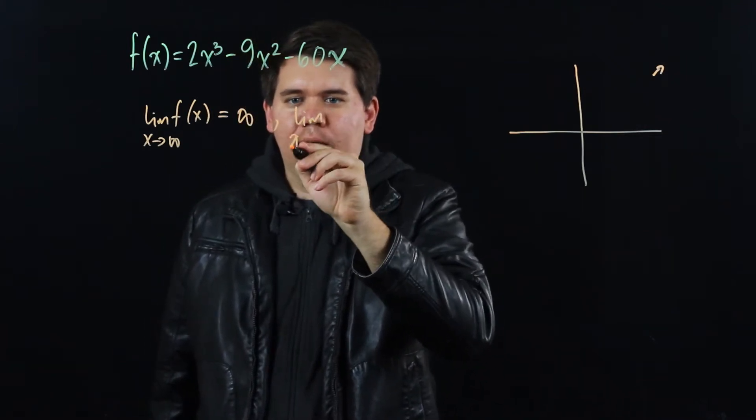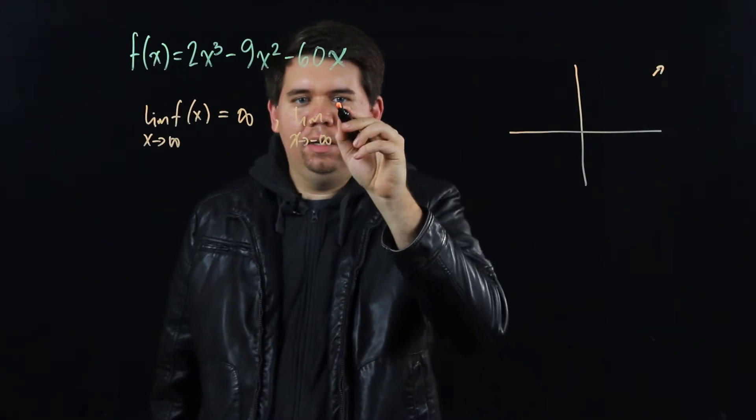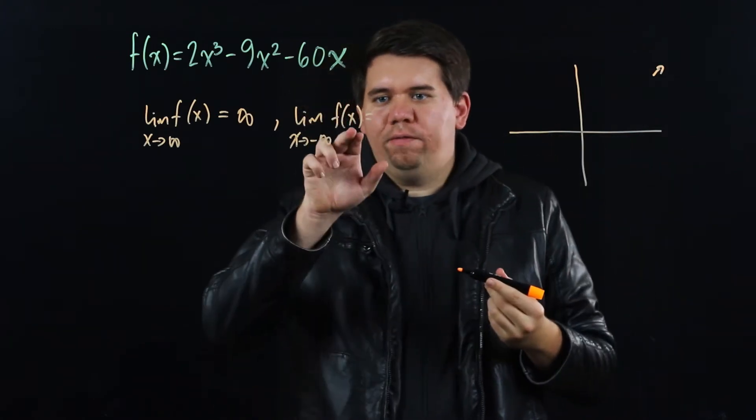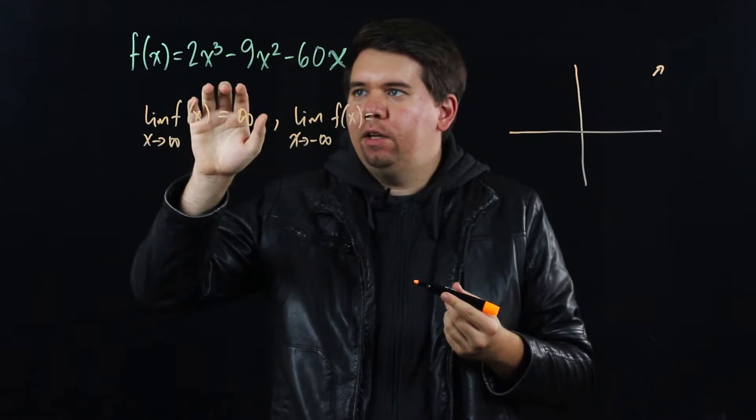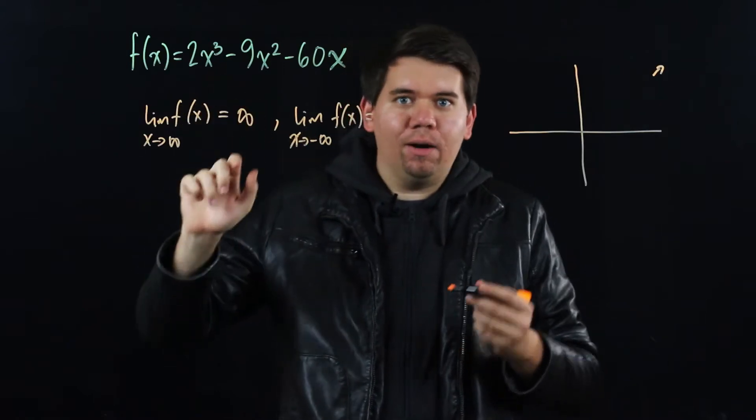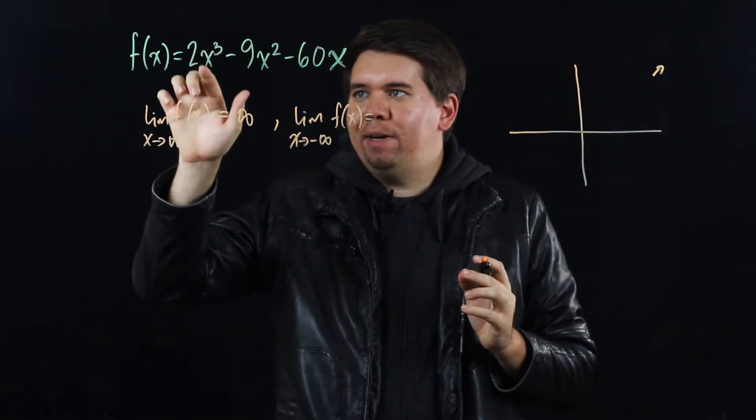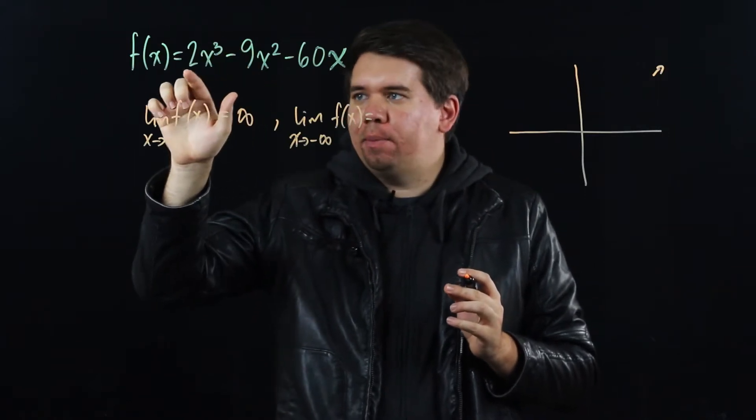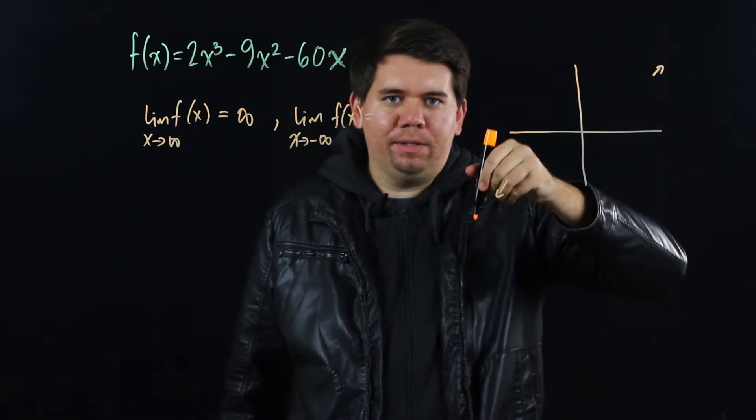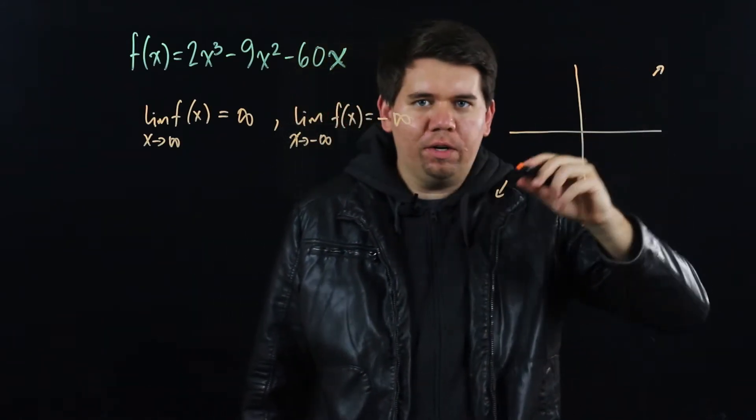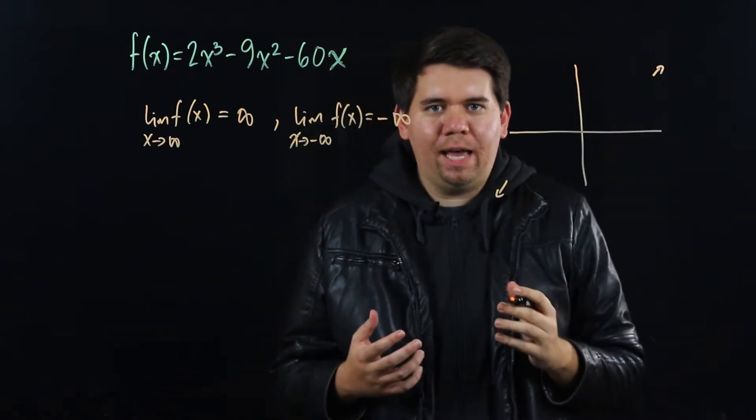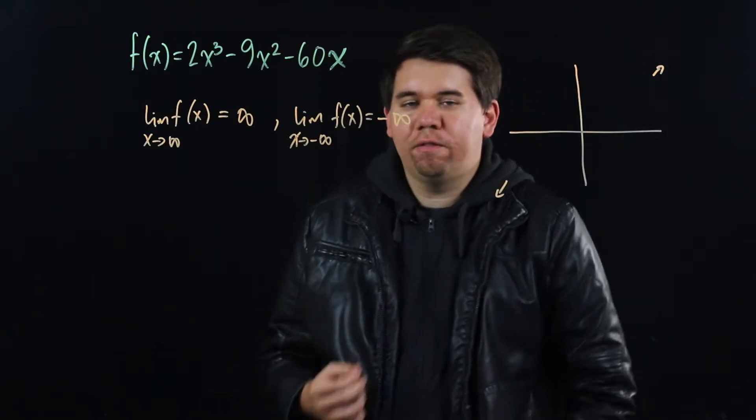Similarly, we can ask what is the limit as x goes to negative infinity of the function. The same analysis as before—only the x cubed term will matter when you plug in really big negative numbers like negative a thousand, negative a million. This will become a negative number because cubed keeps it negative, times by two still negative, so it'll be coming down in the negative direction. But there's still a whole lot of things that can happen in between. To begin to appreciate what's happening in the middle of this graph, let's focus on the first derivative.